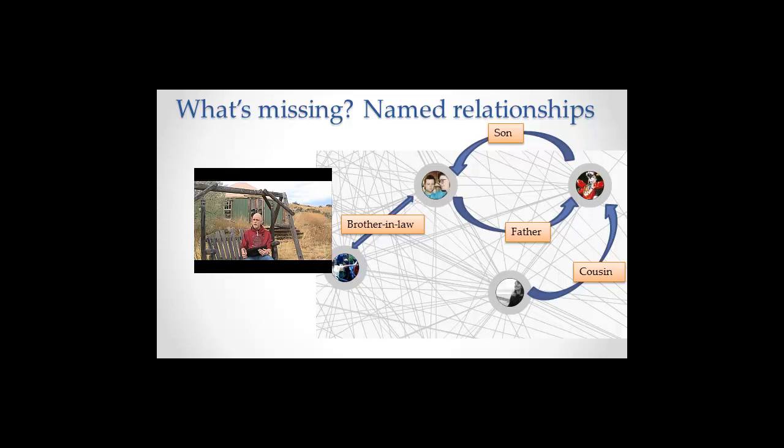But obviously, friend is not the only way that I'm related to people. I'm related to people who are genetically related to me. Father, son, mother, daughter, cousin, aunt, uncle, etc. And so here's a blow-up of a piece of the Facebook social network or a piece of my Facebook social graph with some of that filled in.